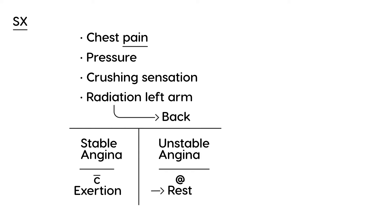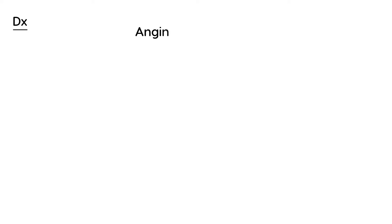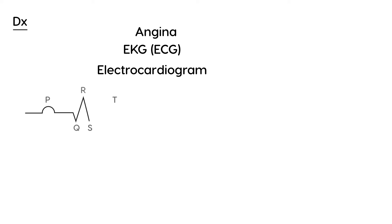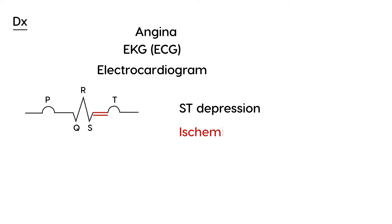If you have a patient and you're pretty sure they've got cardiac-related chest pain, also known as angina, the very first test you would do is an EKG — also written as ECG, or electrocardiogram. The key finding to look for is ST segment depression. The ST segment will be depressed, lower, and that is related to ischemia. That is by far the most typical EKG finding when you have ischemia of the heart muscle.